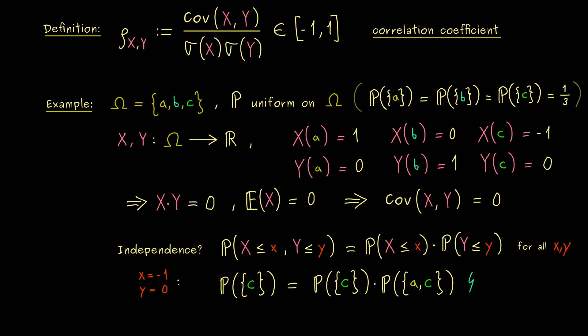In other words, this equation here cannot be satisfied. But of course, you can also put in the numbers and then you see, the left hand side is not equal to the right hand side. And this simply means now, that X and Y are not independent random variables.